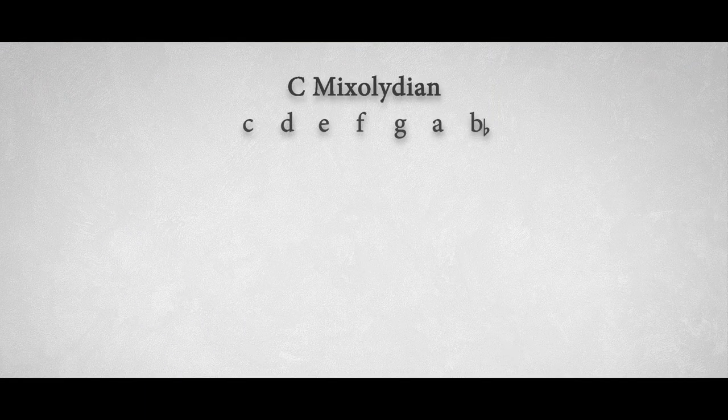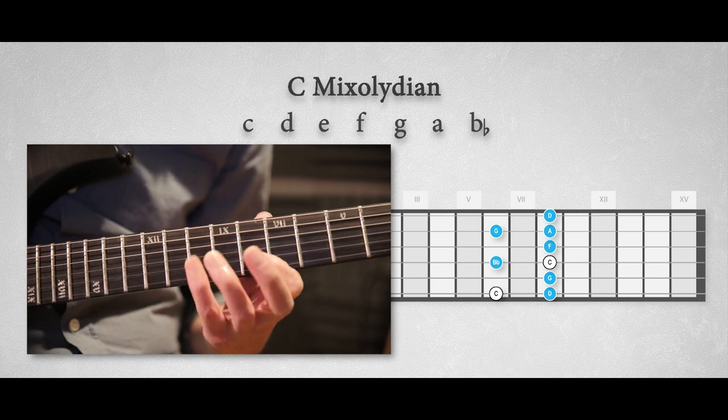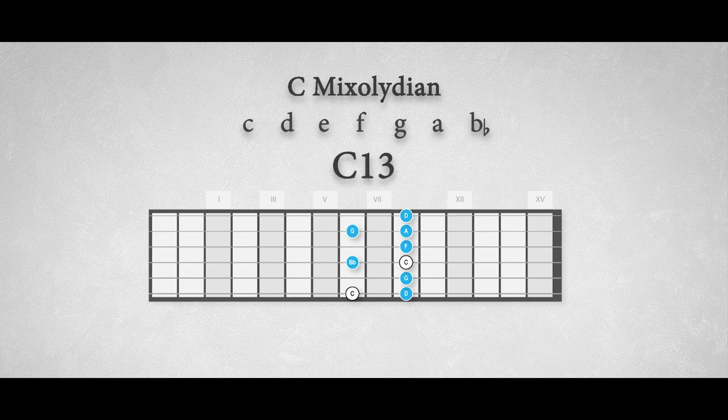We can also apply the more condensed arpeggio that spans only three frets, but with the same systematic idea. And with this we have played the C dominant 13 chord, with the notes C, G, Bb, D, F and A. This is a typical Mixolydian chord.